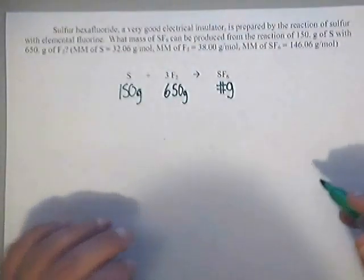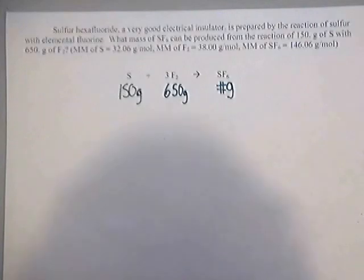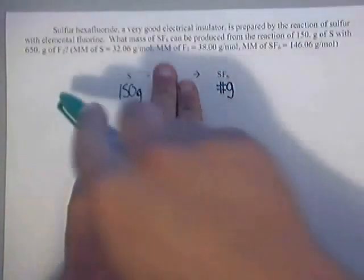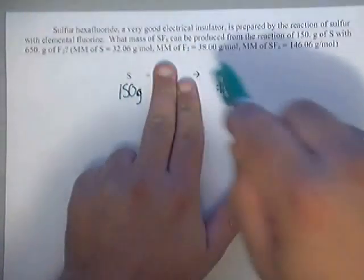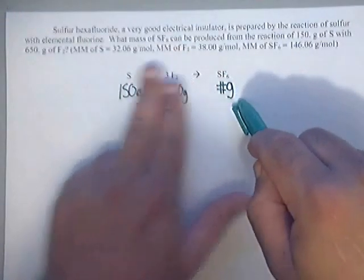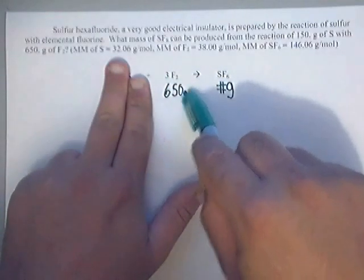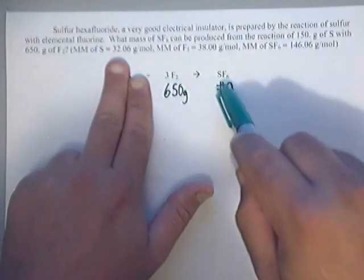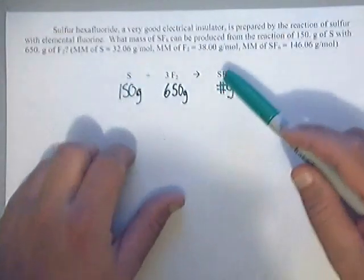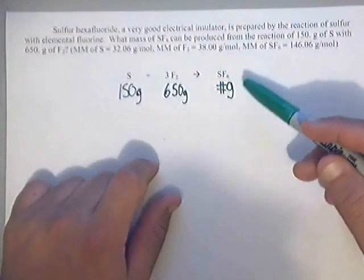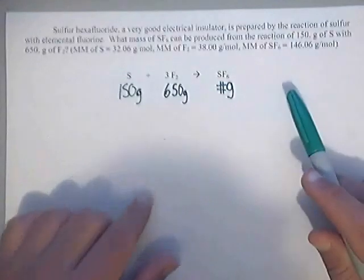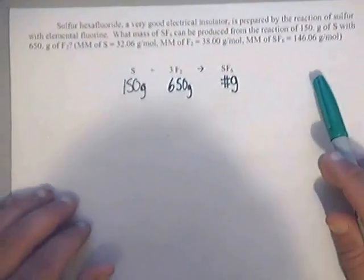Now basically what we have here is we have grams to grams problems. You have grams of sulfur going to grams of SF6. You have grams of F2 going to grams of SF6. So we just need to do two four step problems and then once we do that we'll pick the smaller of the two answers. Anyway, let's get started.